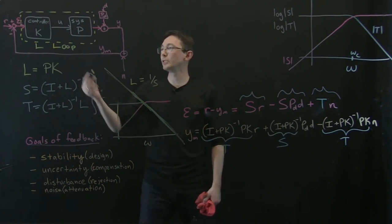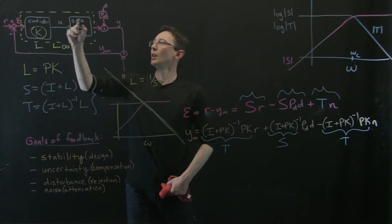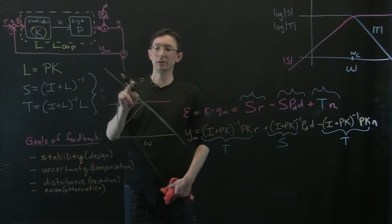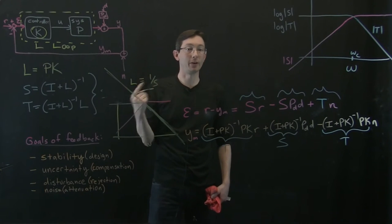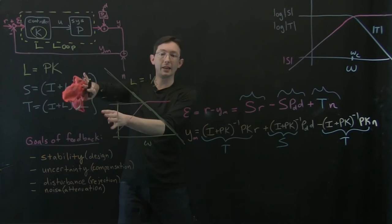And so in general, what I want to do is I actually want to cook up a controller K so that this loop transfer function looks like an integrator, 1 over S. And if I want to move this thing to the right or to the left, all I have to do is multiply it by something like W bandwidth over S.